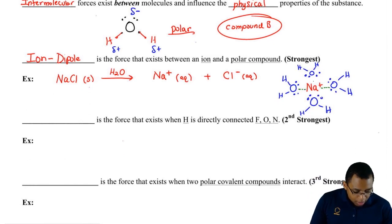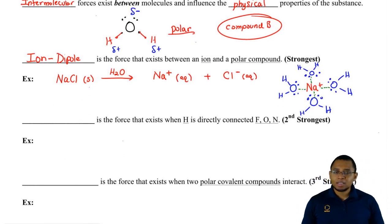So, these little green lines are just an attraction for the positive ion to the partially negative oxygen. If we drew chlorine, we'd show that the partially positive ends, the hydrogens would be attracted to the negative chlorine. That would be our ion-dipole interaction.